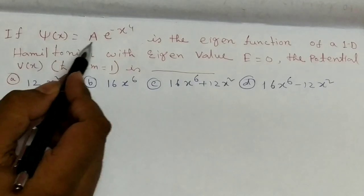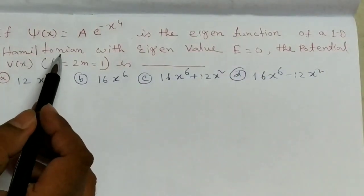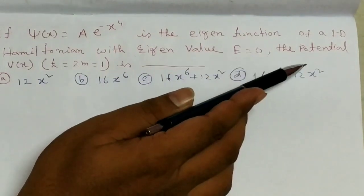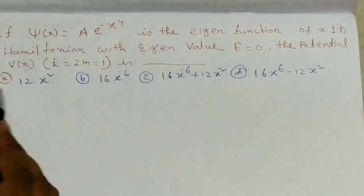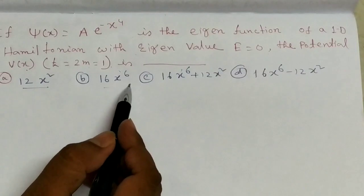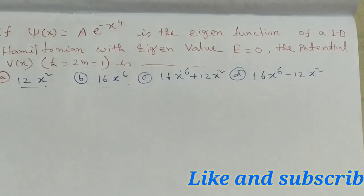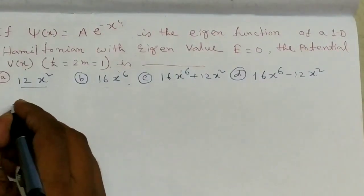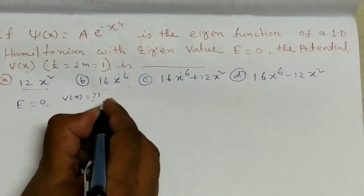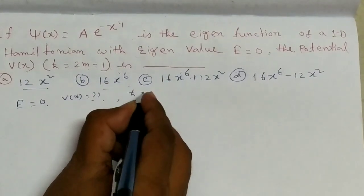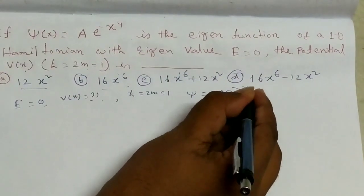Now we discuss an important problem. Given that Psi equals A·e^(−x⁴) is the eigenfunction of a one-dimensional Hamiltonian with eigenvalue E equals zero, find the potential V(x), given that h-bar squared / 2m equals 1. The answer options are: 12x² − 16x⁶, 16x⁶ + 12x², 16x⁶ − 12x². We are given E equals zero, h-bar squared / 2m equals 1, and Psi equals A·e^(−x⁴).